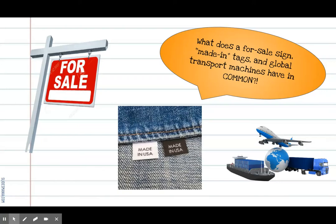Hello! So I have a question for you. What does a for sale sign, made-in tags on your clothing or on different items in your house, and global transportation machines like airplanes or cargo boats or 18-wheelers — what do all of those things have in common?